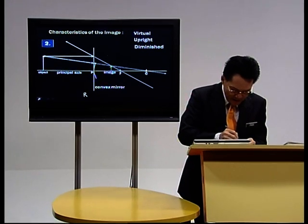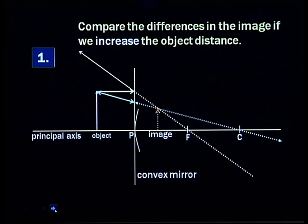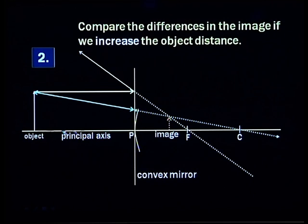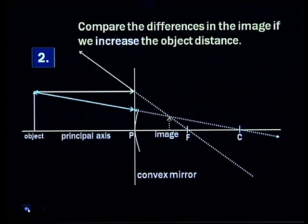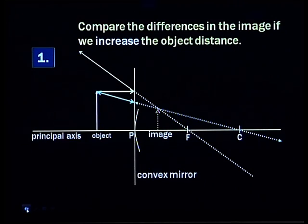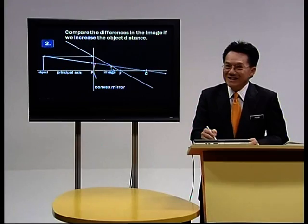Compare the differences in the image if we increase the object distance. Look at the object distance in case one — it's small. Look at the object distance in case two — it's big. In number one the image is bigger; in number two the image is smaller. So when the object is nearer to the mirror, the image is bigger. When it is further away, the image is smaller.